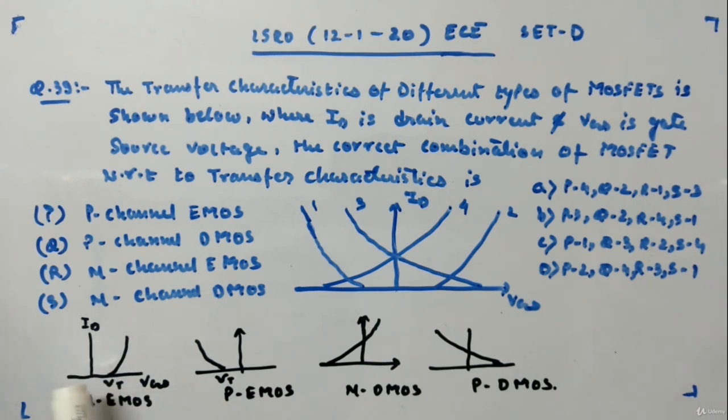This is your threshold voltage VGS ID. The curve goes like this. Same will be like this for P enhancement type MOSFET VGS ID. Similarly, VGS ID for NMOS depletion type and this is for P type depletion type.